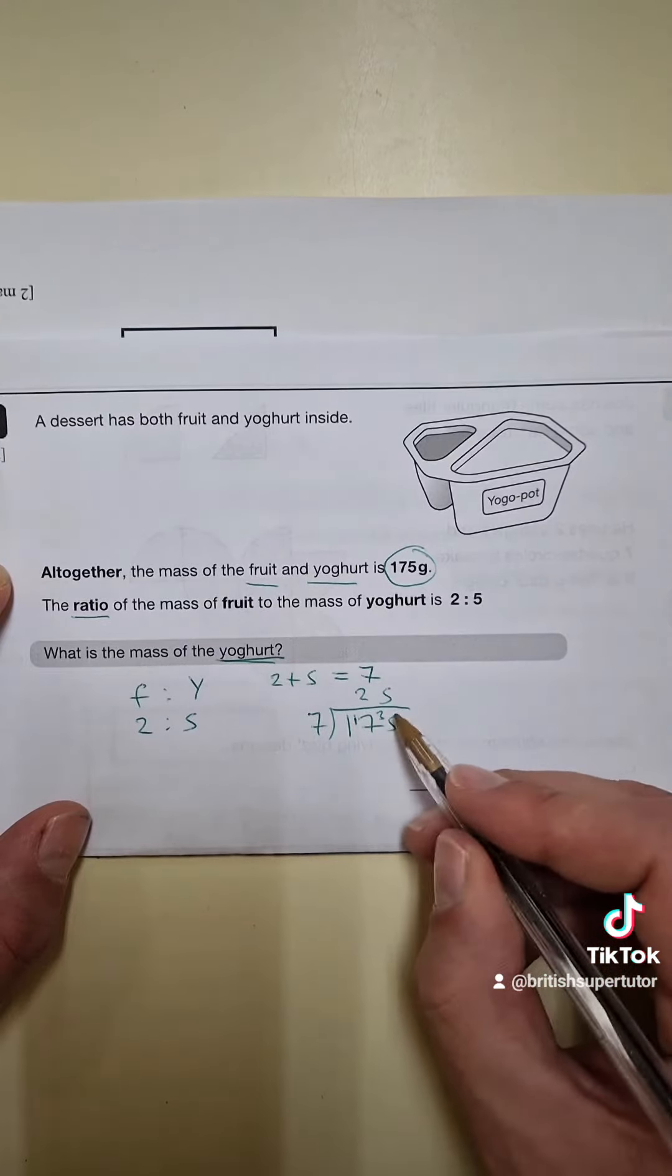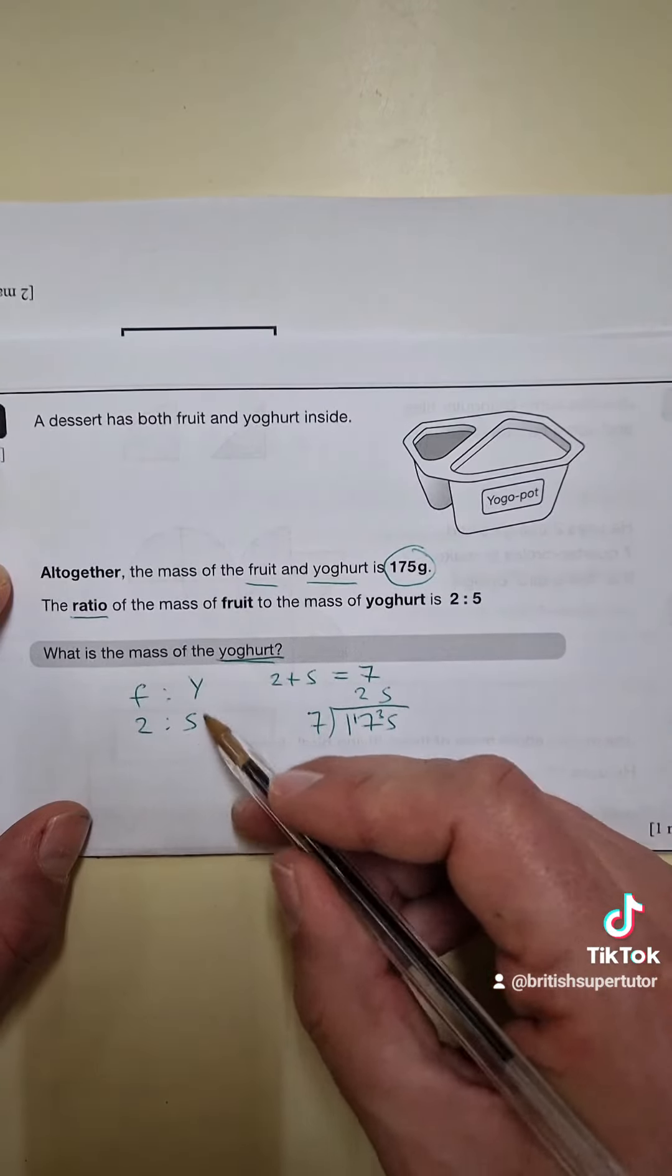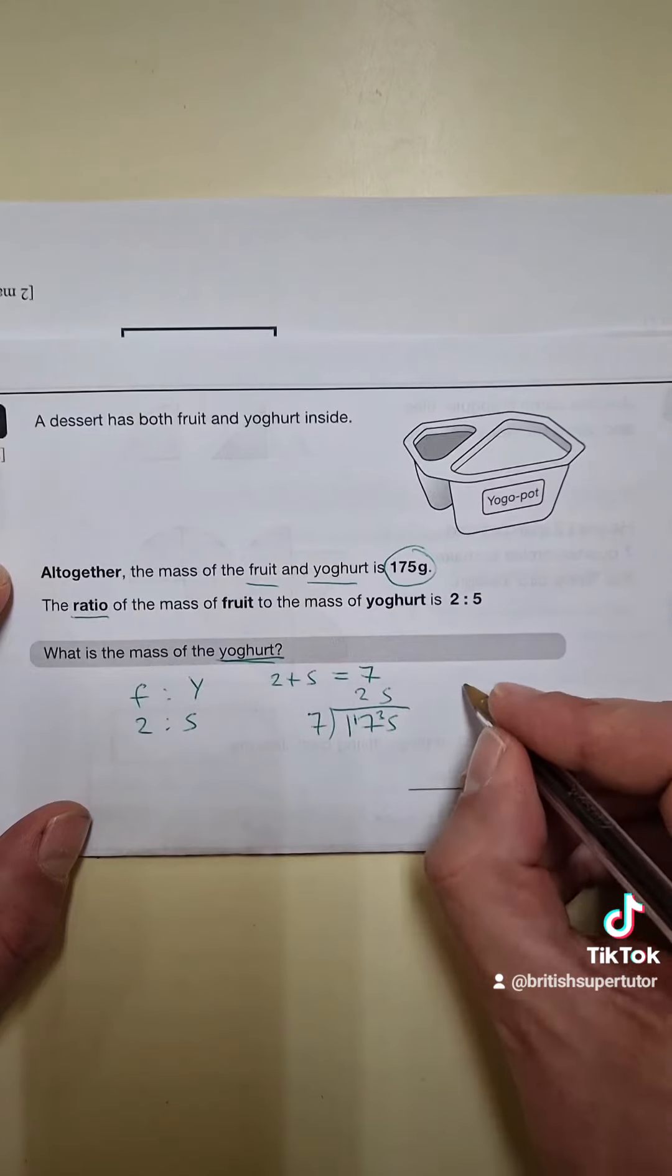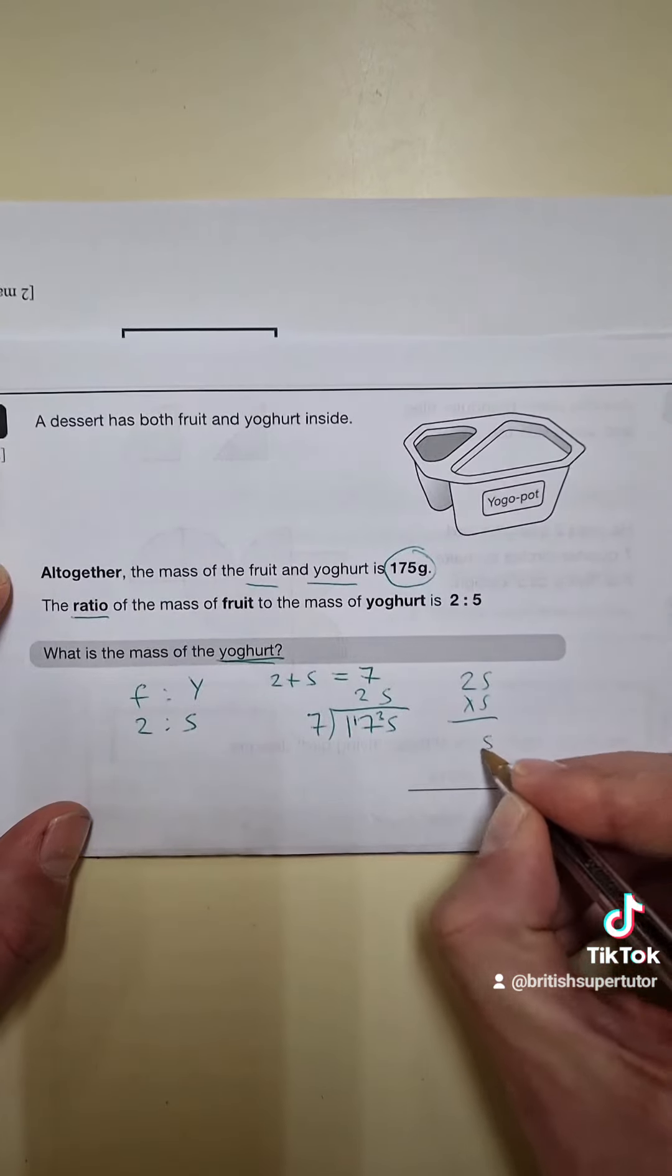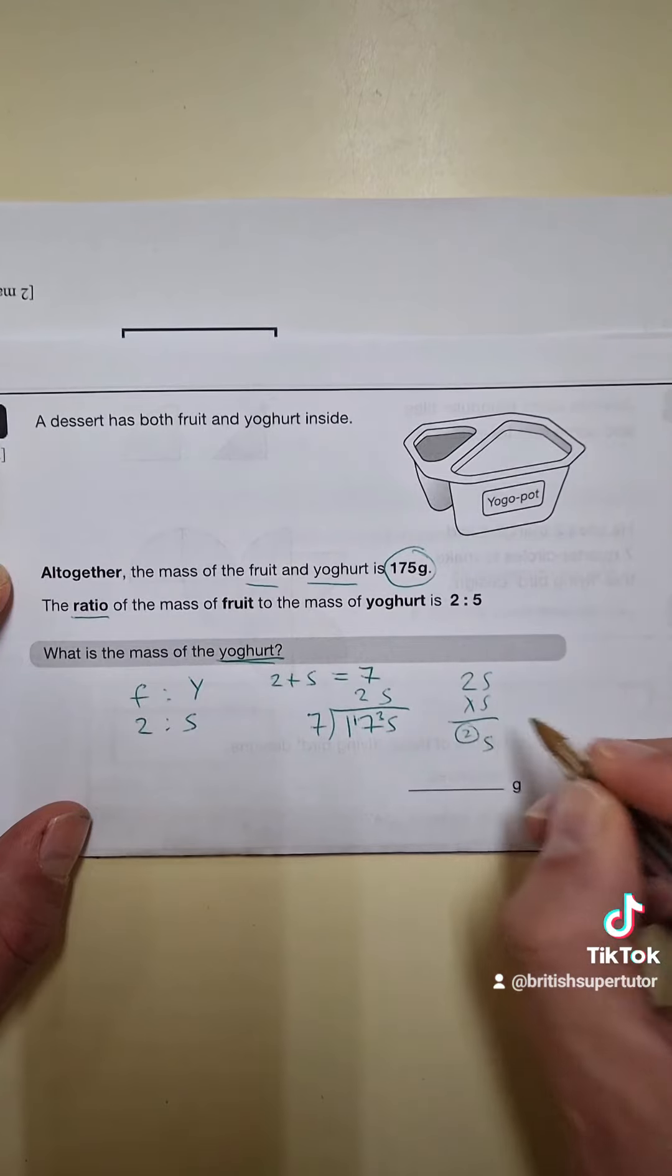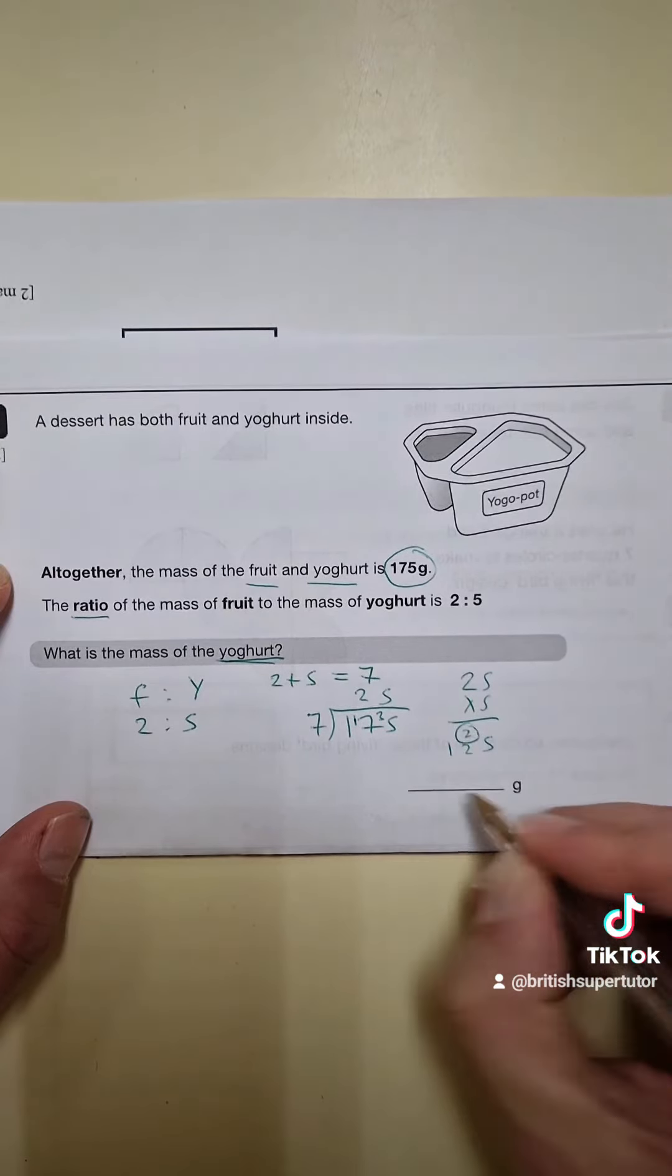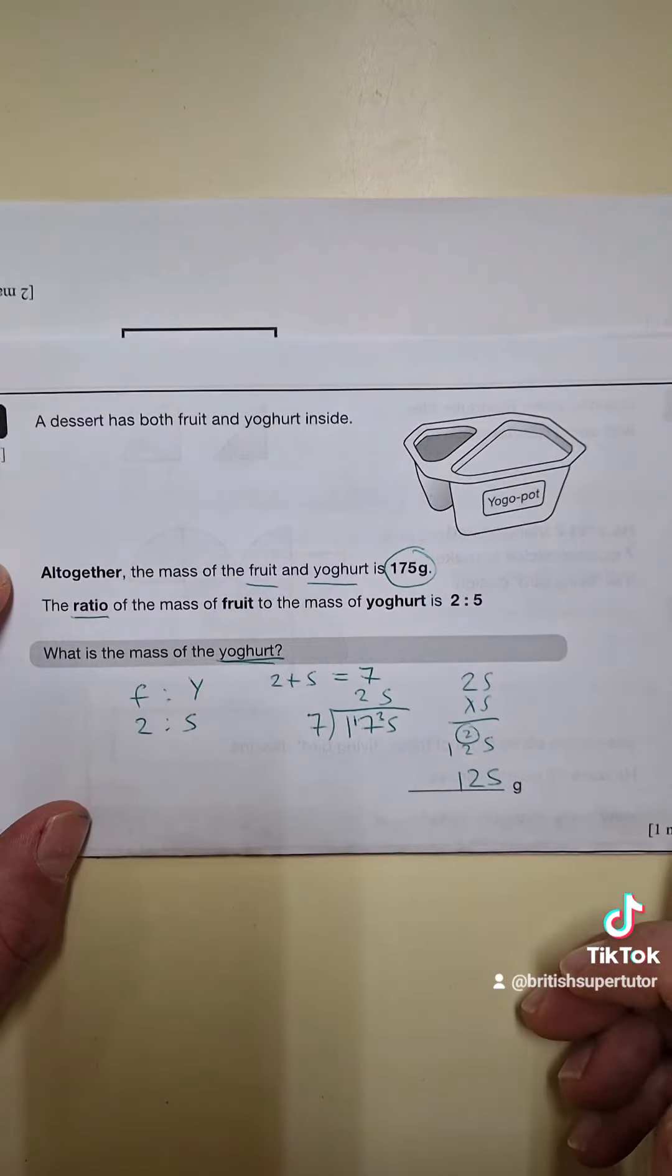So now we're going to do 25 multiplied by the ratio for yoghurt, so 25 times by 5. 5 times 5 is 25, but the 5 there carry the 2. 5 times 2 is 10, plus the 2 is 12. So the answer is 125 grams.